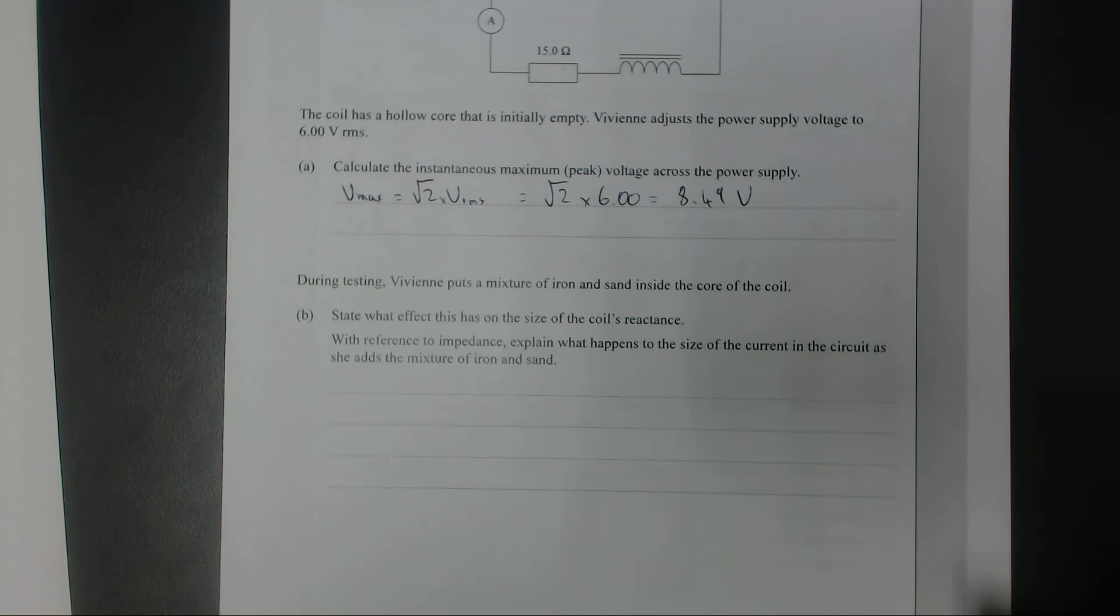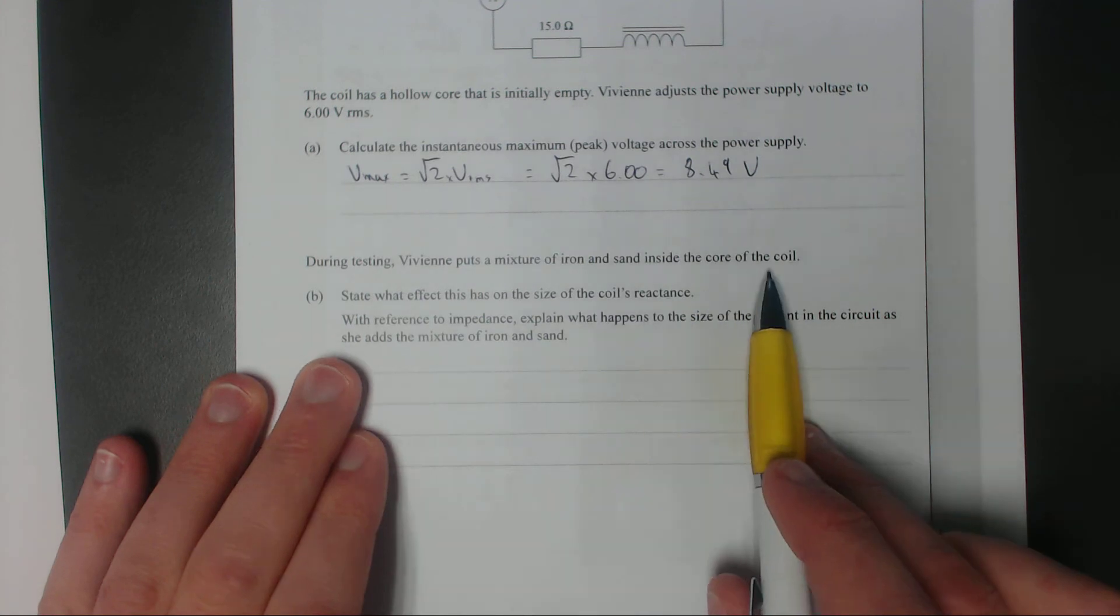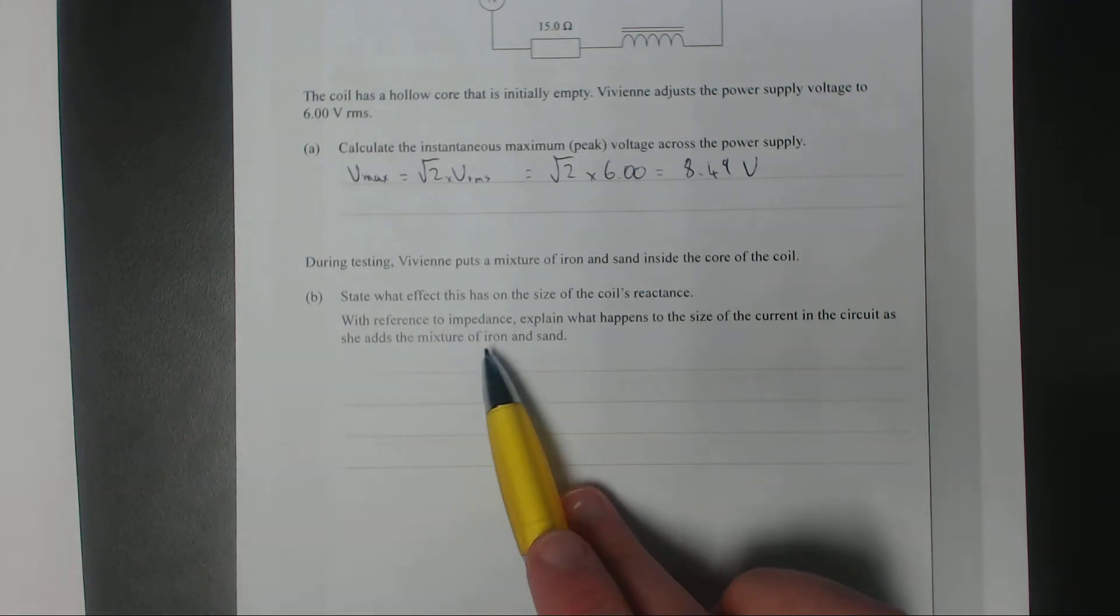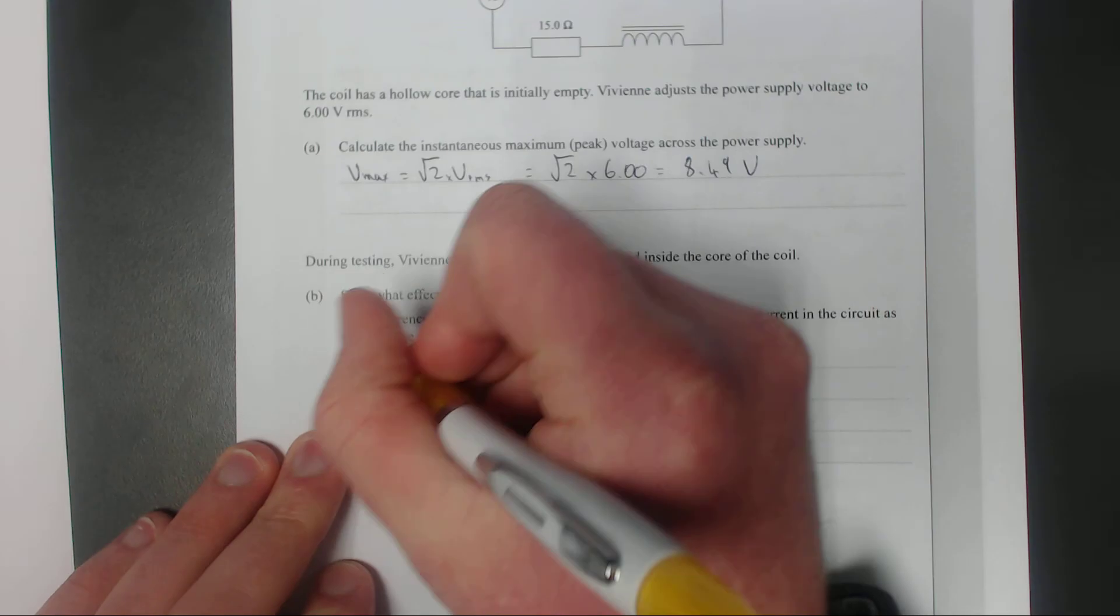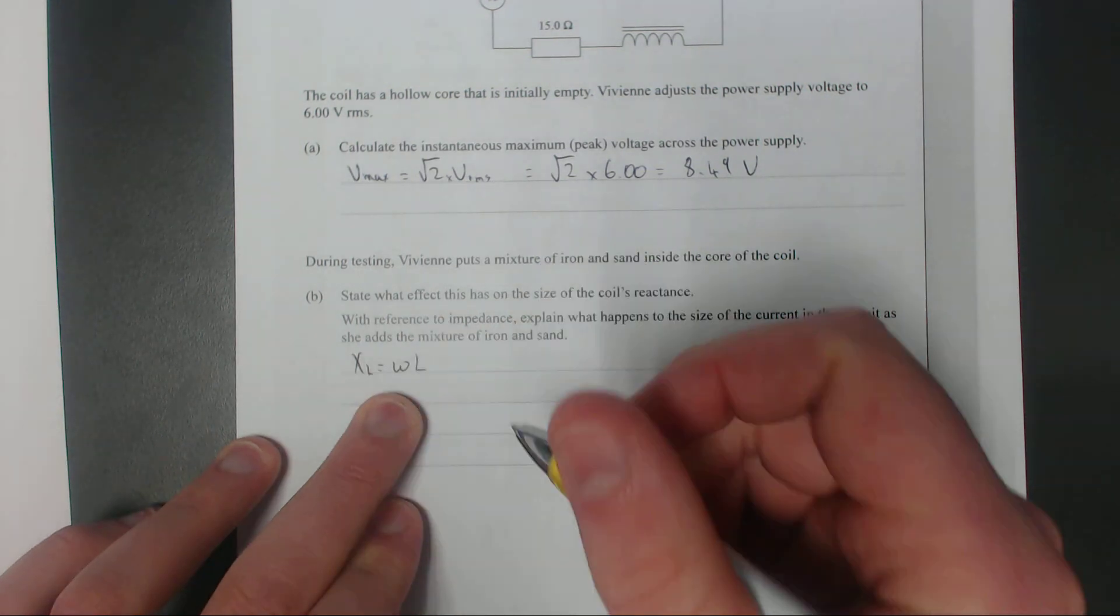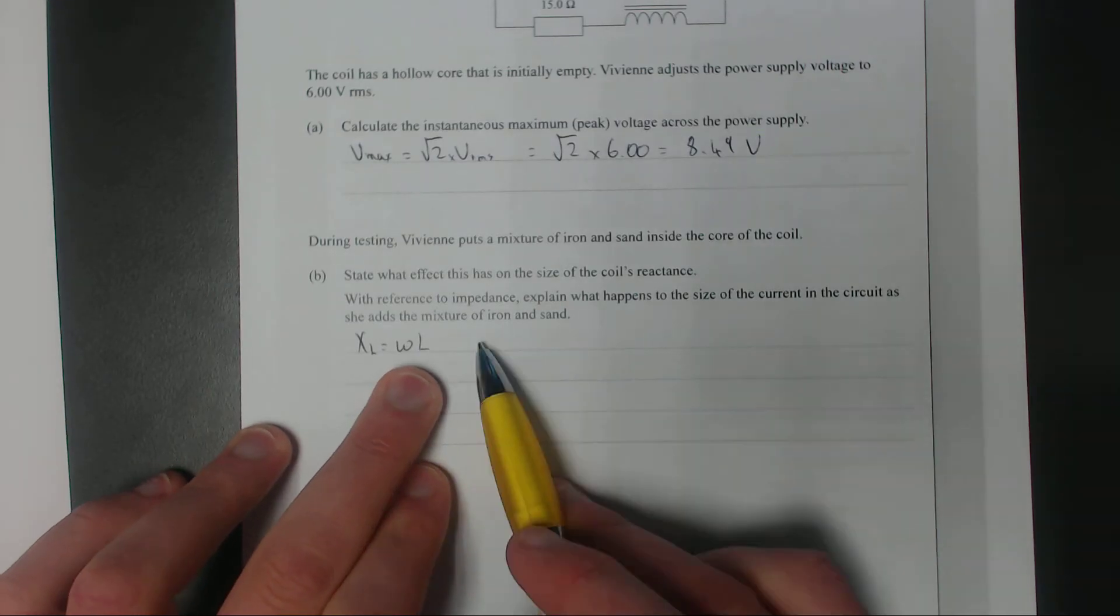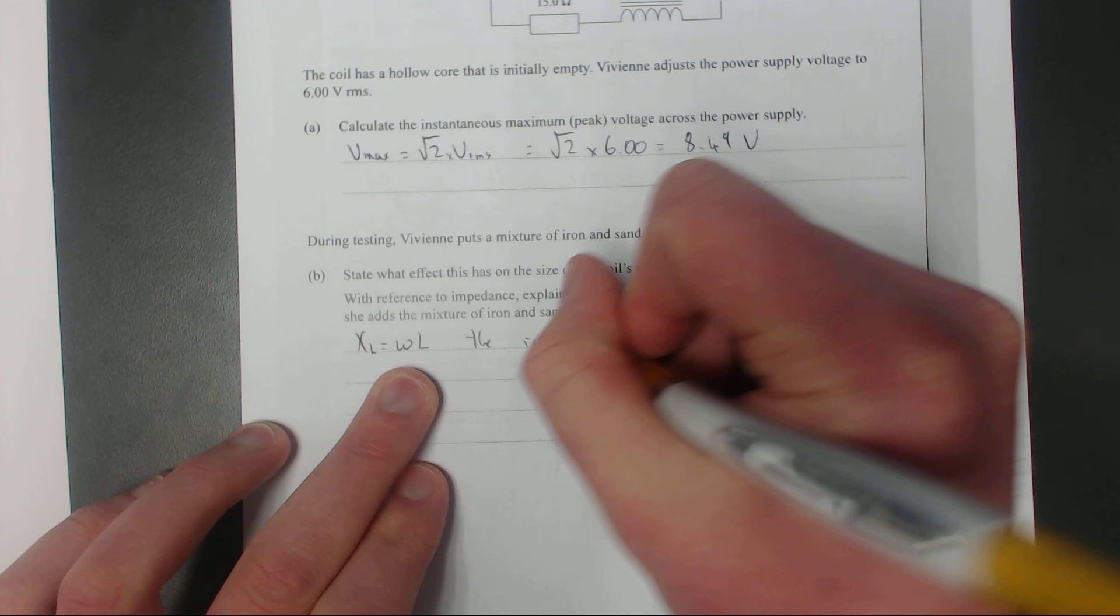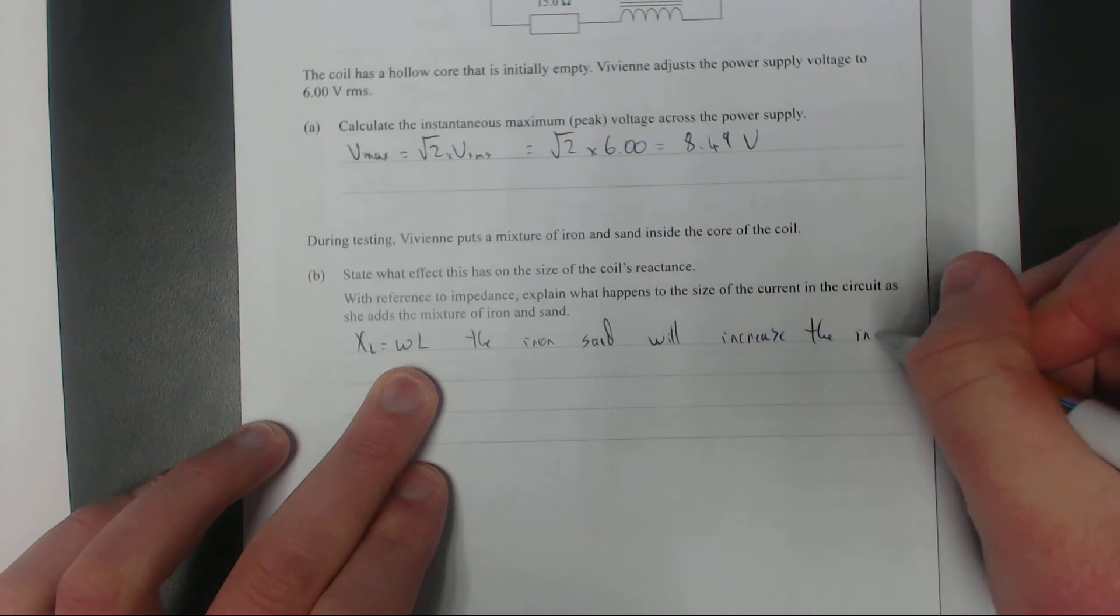During testing, Vivian puts a mixture of iron and sand inside the core of the coil. State what effect this has on the coil's reactance. The reactance of the inductor XL equals the angular frequency omega times the inductance L. Angular frequency is 2π times the regular frequency. If you put sand in there, it's going to increase the inductance, thus increasing the reactance XL.